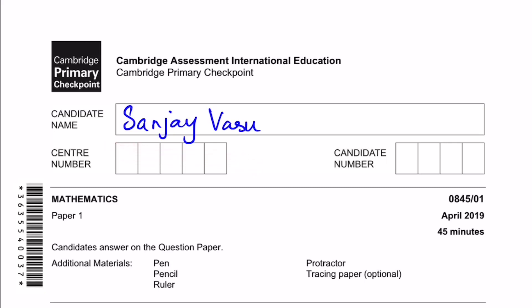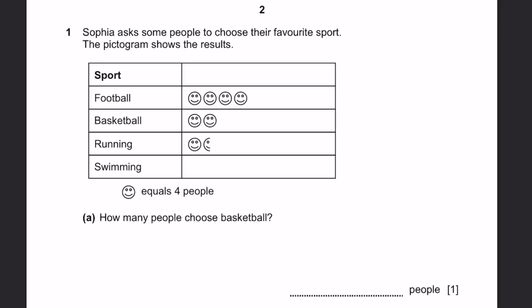Hello everyone, it's me, Sanjay Rasu, back again for another video. This time I'm doing it on Cambridge Primary Checkpoint for Mathematics, Paper 1, April 2019. Now, if this is not allowed, let's start. Question 1. Sophia asked some people to choose their favorite sport. The pictogram shows the results.